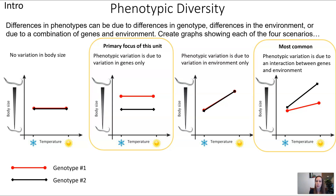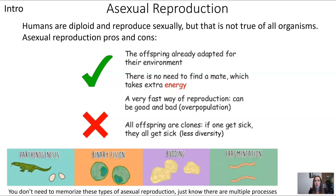Because we want to keep things simple, we're primarily going to focus in this unit on phenotypic variation that is due to genes. The last point I want to make in the introduction is comparing asexual reproduction and sexual reproduction. In this unit we're going to focus primarily on sexual reproduction, but I just want to make sure you're aware that's not the only way of making more organisms. We're a little biased because humans reproduce sexually, but there really are pros and cons both ways.